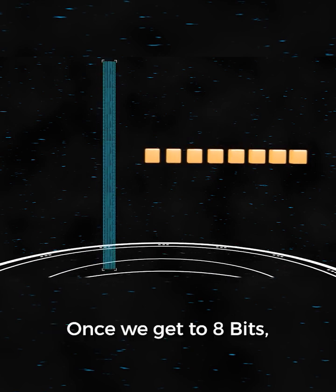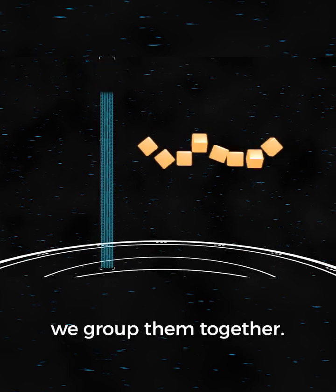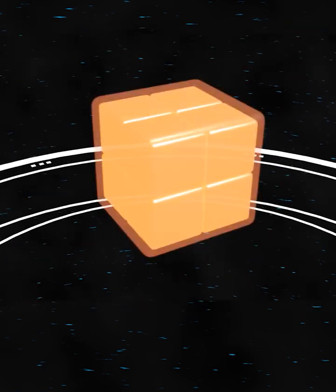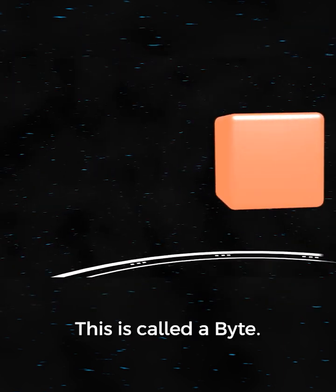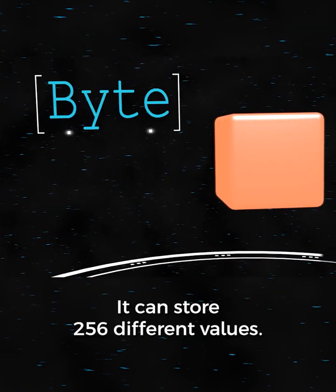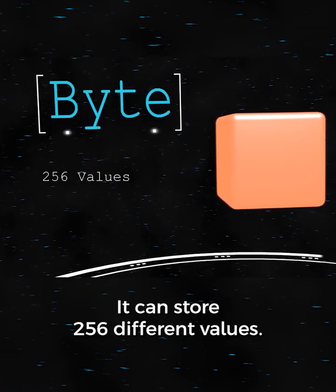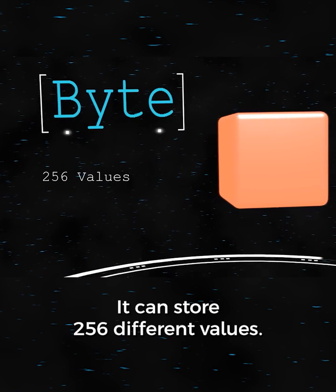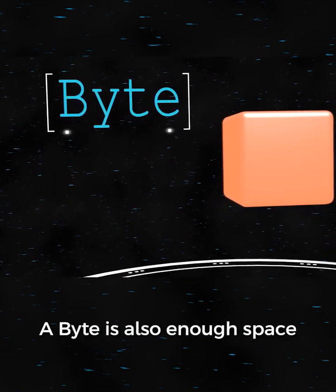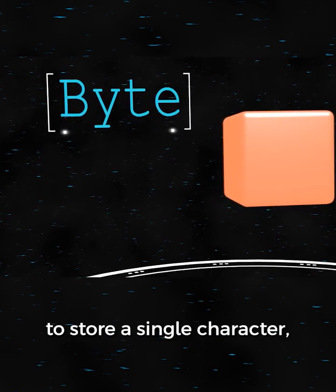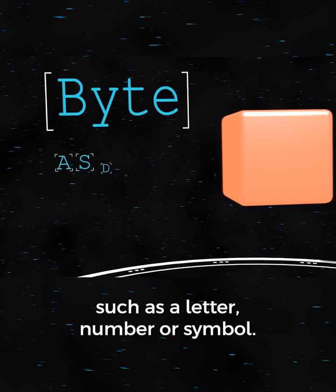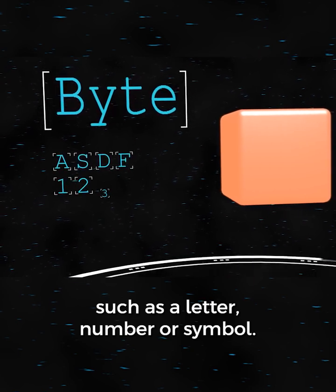Once we get to eight bits, we group them together. This is called a byte. It can store 256 different values. A byte is also enough space to store a single character, such as a letter, number, or symbol.